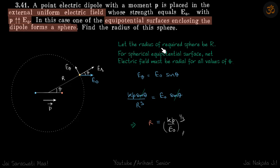Let the radius of the required sphere be R. For a spherical equipotential surface, the net electric field must be radial for all values of theta. So radial means perpendicular outward.